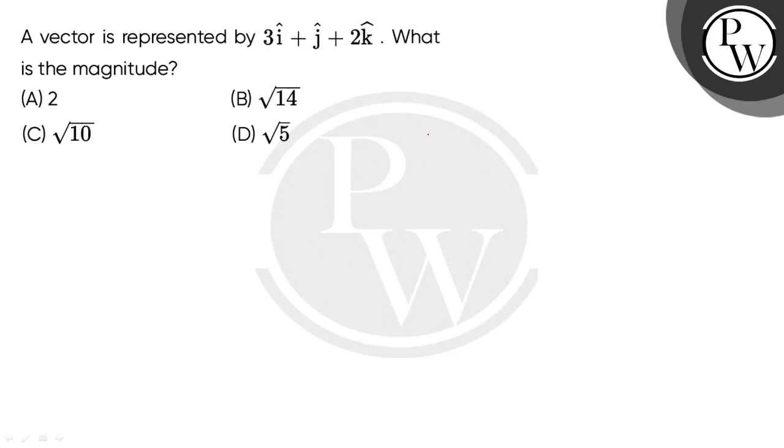Hello, let's look at the question. A vector is represented by 3i cap plus j cap plus 2k cap. What is the magnitude? Okay, so we have to find out a very simple question. The vector we have here is 3i cap plus j cap plus 2k cap.